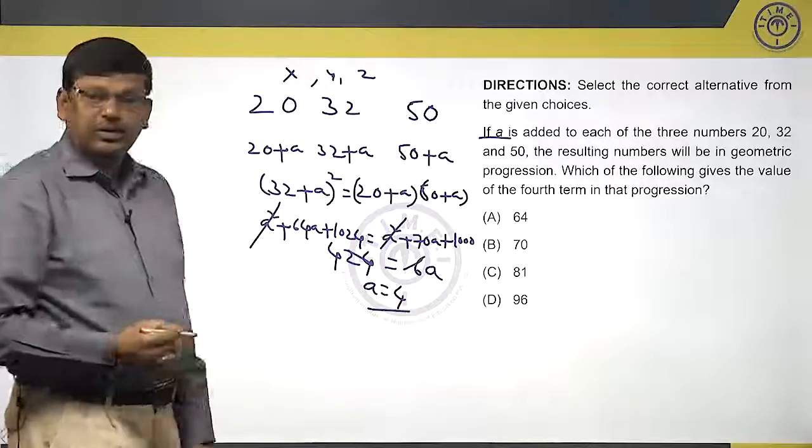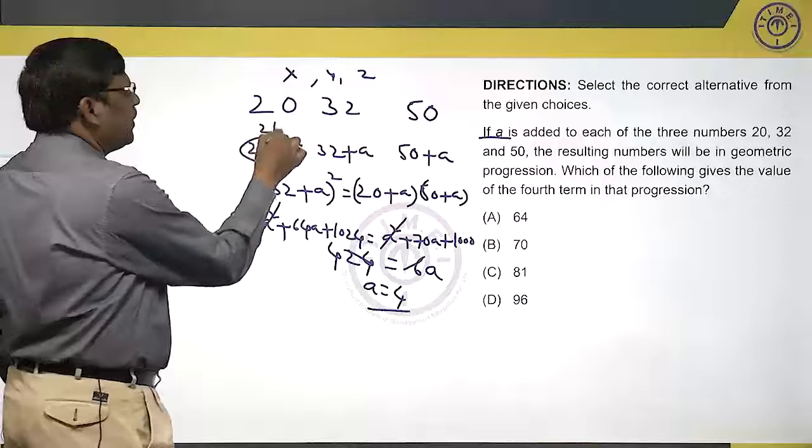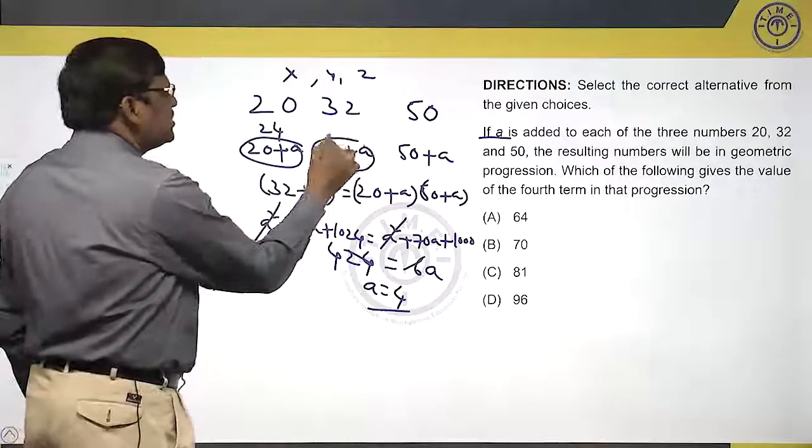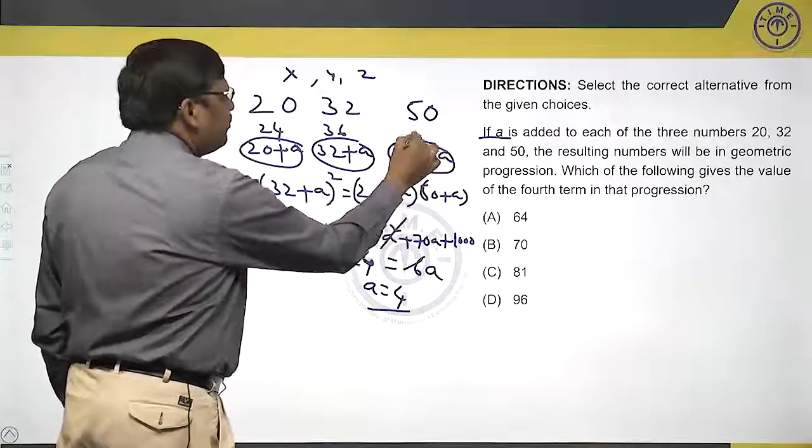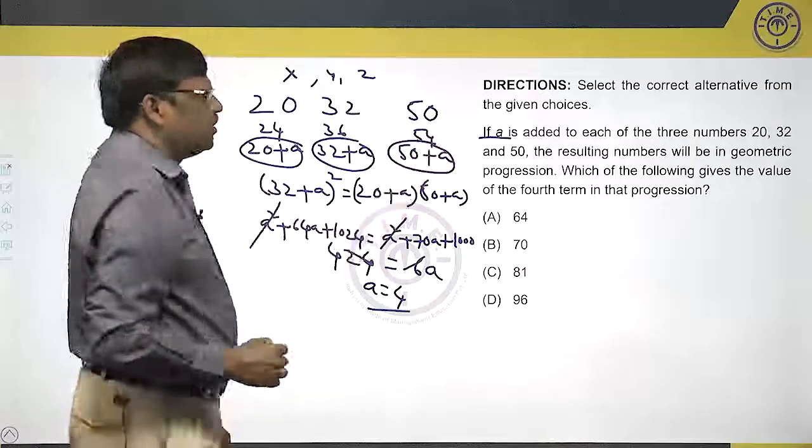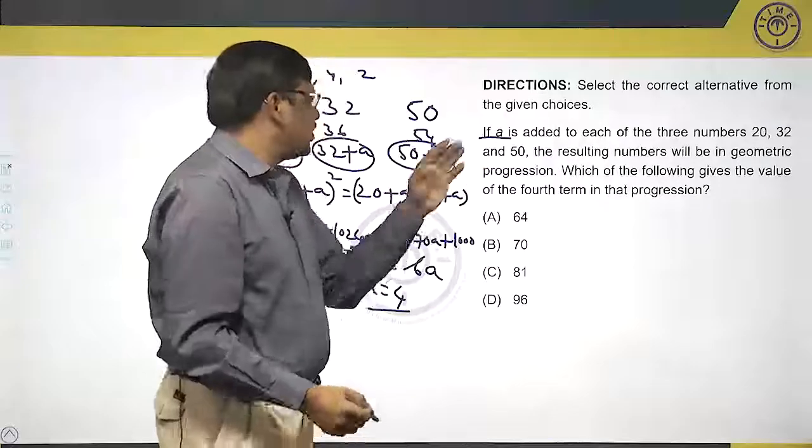Once A is 4, what these numbers will be? 24, 36 and 54. Now, what will be the next number is the question here. What will be the fourth term in this progression?